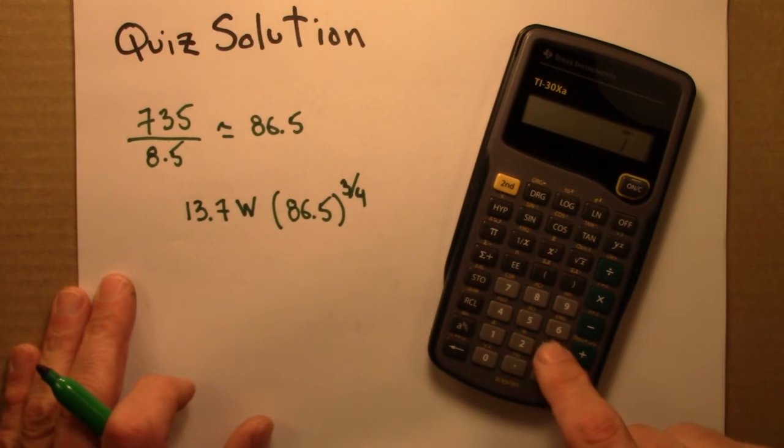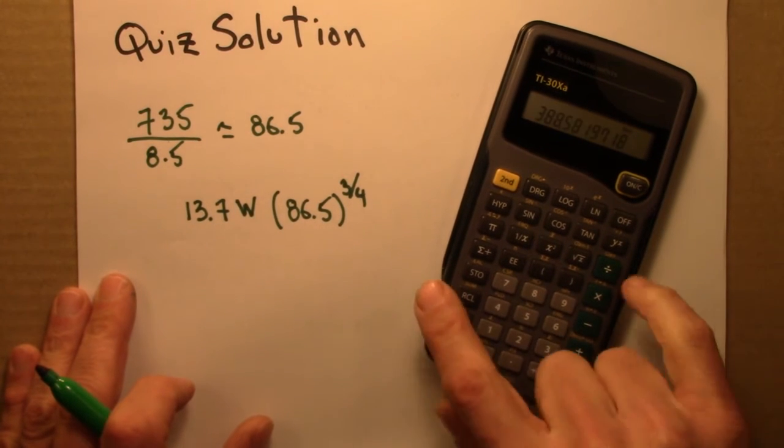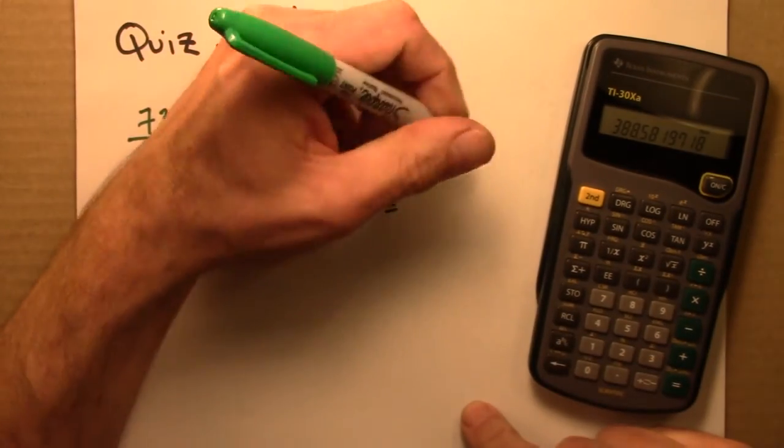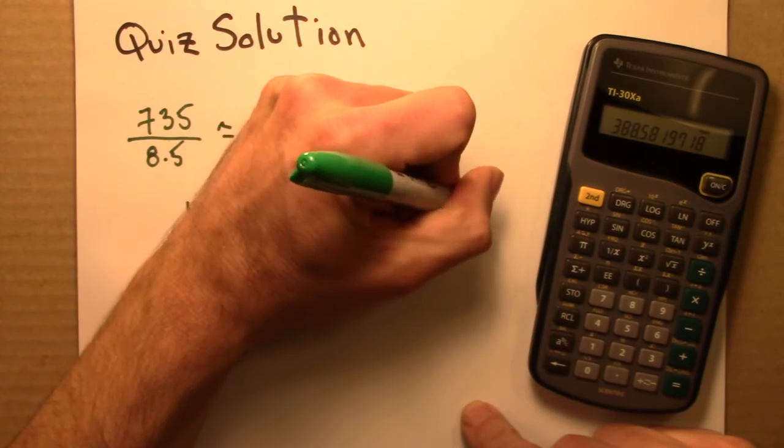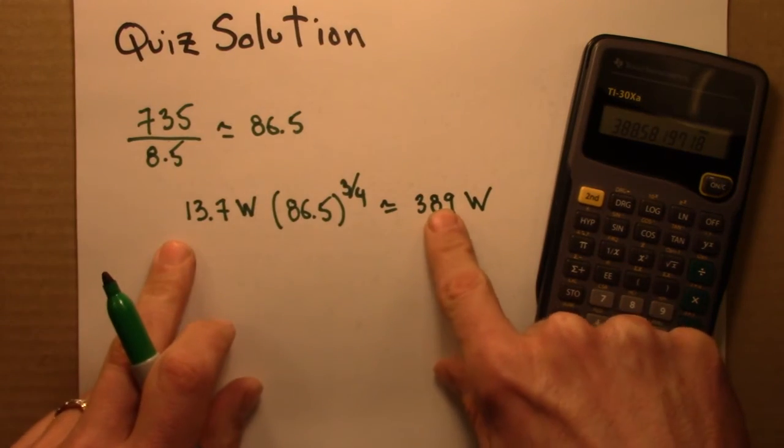Multiply that by 13.7, and that's going to give me about 389 watts for the sea lions.